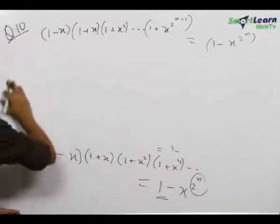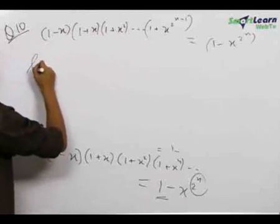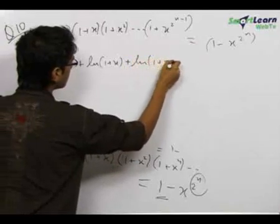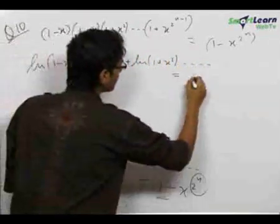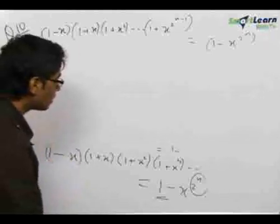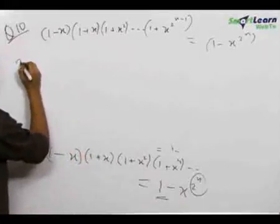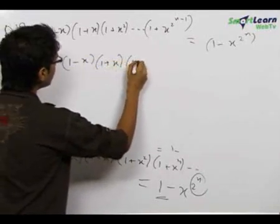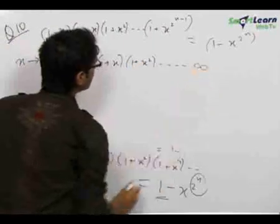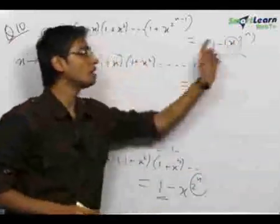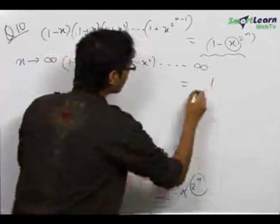As stated earlier, if there are a large number of functions of x multiplied together, we take ln first and then differentiate. However, since we need the sum up to infinity, we first tend n to infinity. This product becomes (1-x)(1+x)(1+x²)···up to infinity, and since x is less than 1, any fraction to the power infinity equals 0, so the right-hand side becomes 1.